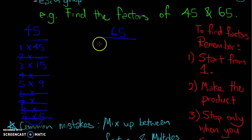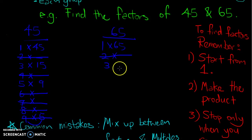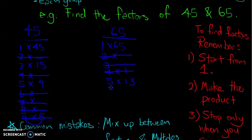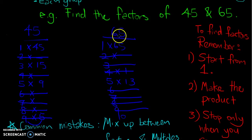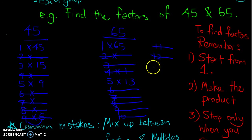For 65, we do the same thing. 1 × 65 = 65. 2: gives a remainder — not a factor. 3: no. 4: no. 5: 5 × 13 = 65 — so 5 and 13 are factors. 6, 7, 8, 9, 10, 11, 12: none work. 13: 13 × 5 = 65 — but that's a repeat. Cancel and do a U-turn.